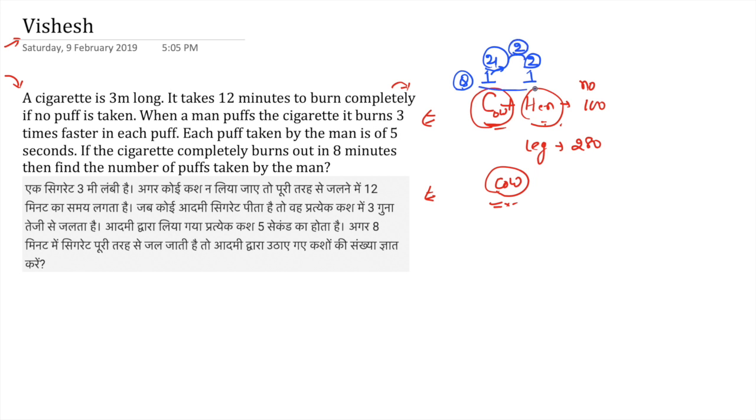In the cow and hen problem, we know the head count is one and one. So this is the quantity. But the leg count is four and two. This is the quality. And the quality gap is nothing but two. I am repeating: head count is equal to one and one, that is the quantity. How many are there? Quality of the cow and hen is the leg count, that is four and two. And the quality gap is two.